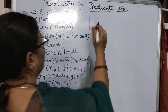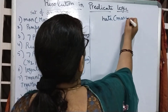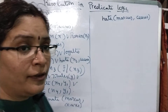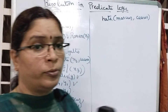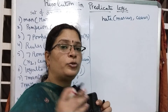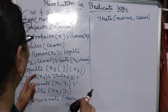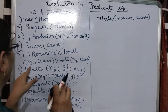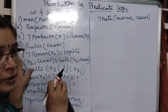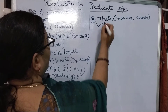I have to start with hate(Marcus, Caesar). Whenever I am going to start with negation — because in resolution I already told it is proof by negation or proof by refutation — whatever thing we will consider, you have to start with the negation. Now, where will hate get cancelled? Just see in the set of given axioms. Axiom number 5 — it can get cancelled with this particular negation.